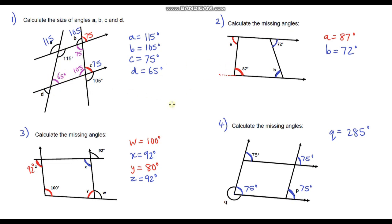So how did you get on with those four questions? Hopefully you got most of them, if not all of them correct. Just to finish, one of the most important things when dealing with angles on parallel lines is not assuming that the lines are parallel — you can only use these angle facts if you're specifically told the lines are parallel, shown by the arrows. Thank you very much for watching and hopefully I'll see you in the next video. Take care.